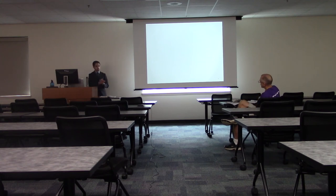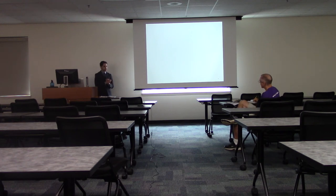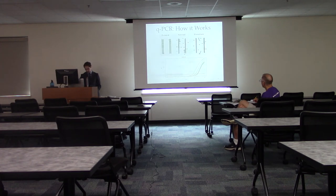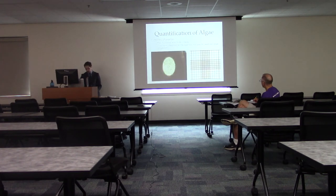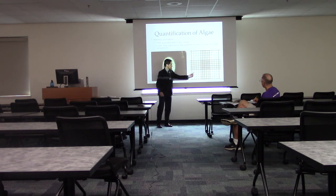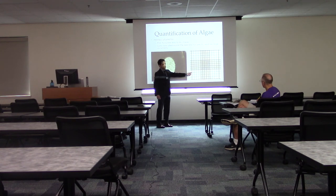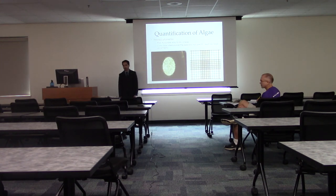Q: How big are the mature algae cells? A: Really small — I don't know the exact size, but on a hemocytometer each square is about 10 to a millimeter, and there could be hundreds of cells in there, so they're pretty small — like five to ten microns somewhere around there.